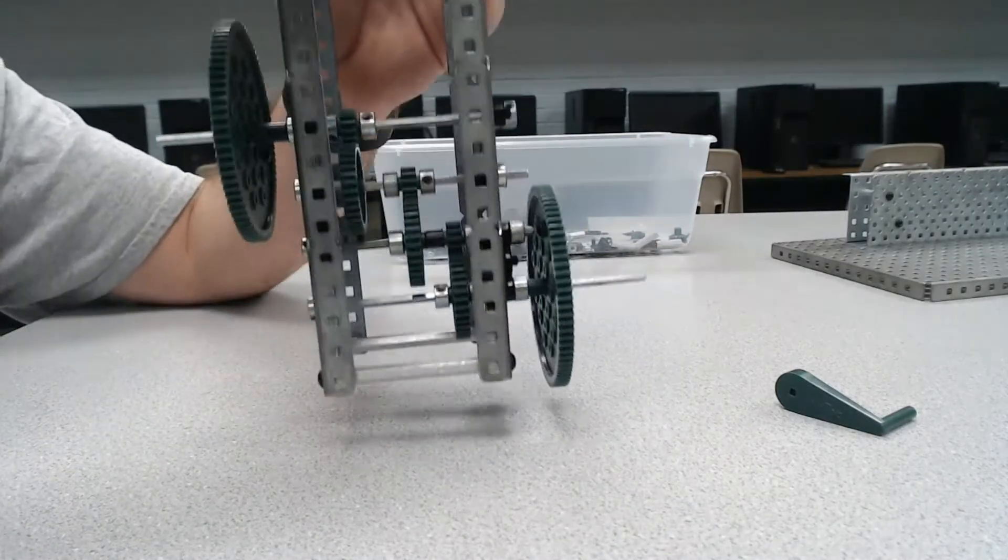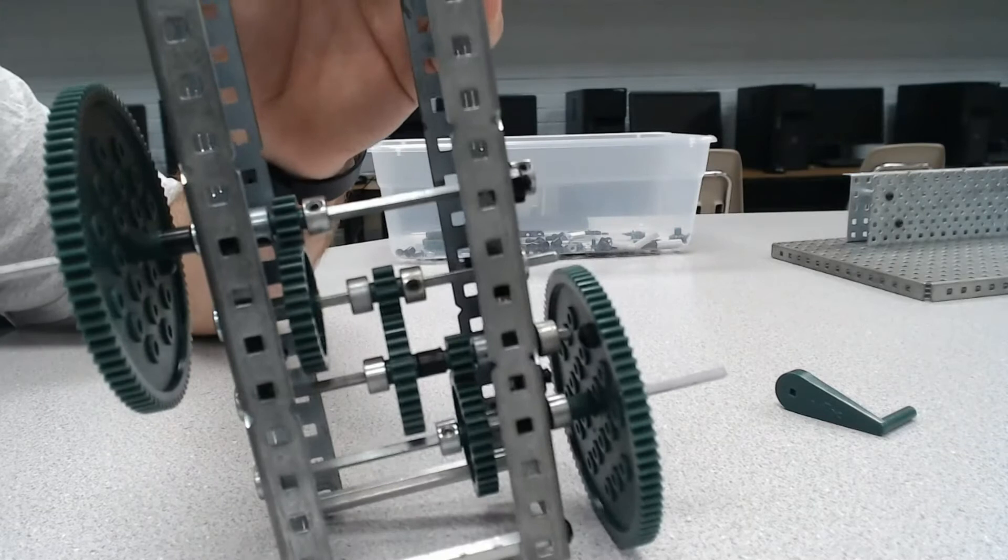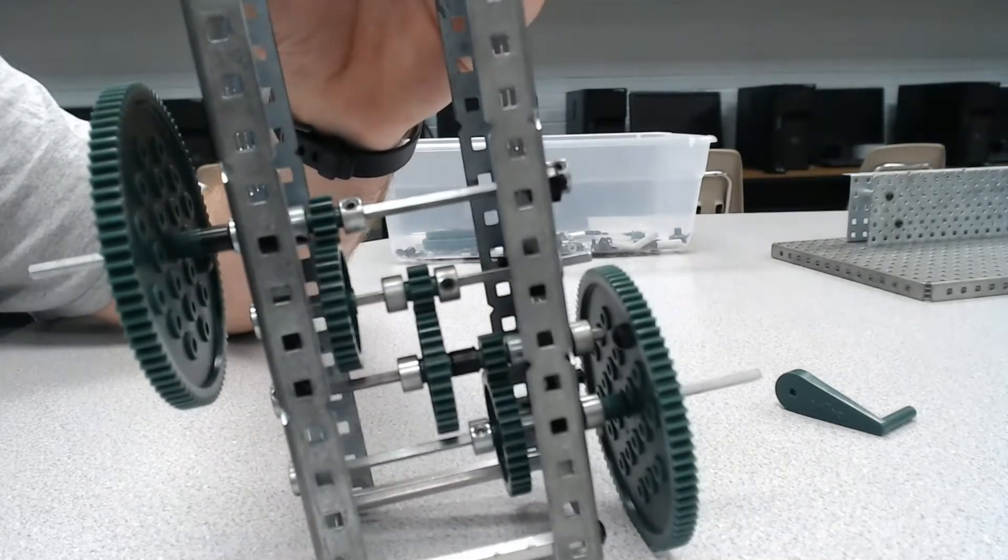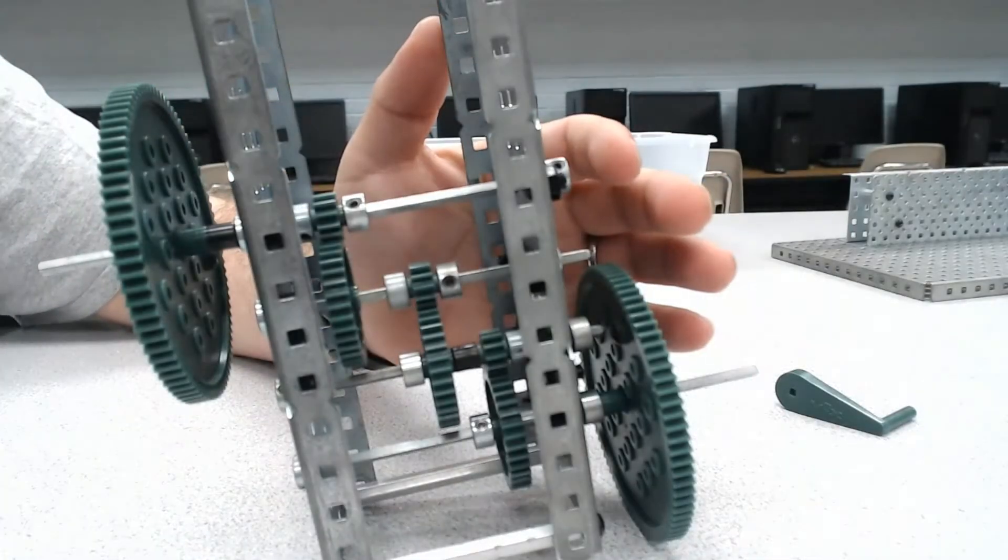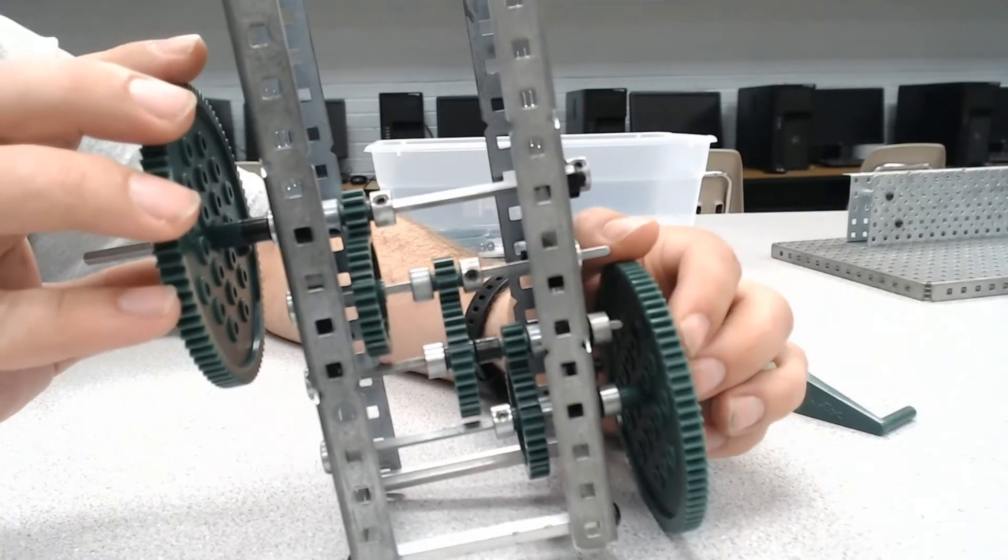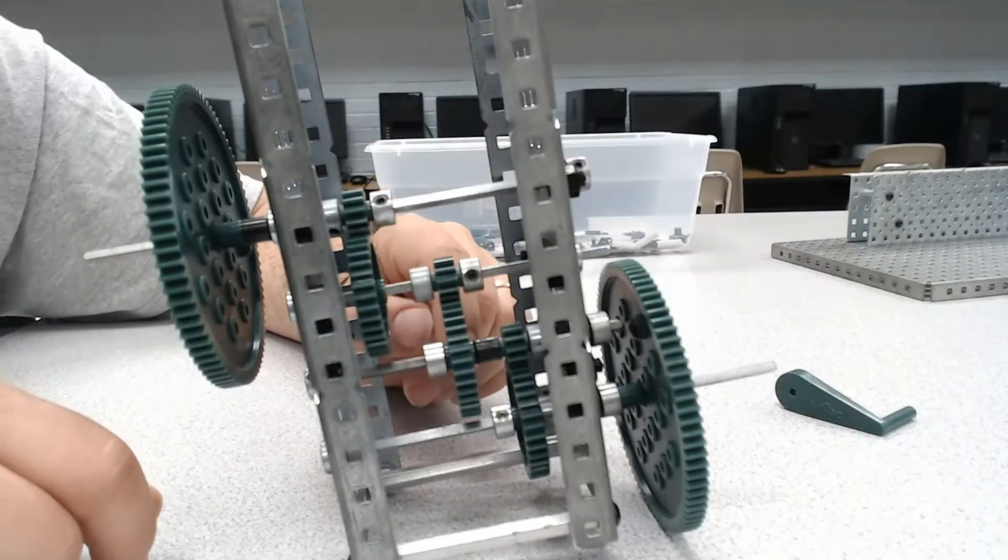So let's rotate this. Now, if I move this a little bit closer so you can see, we have a lot going on here. We have an 84-tooth gear on either side, and then we have a bunch of gears on the inside.